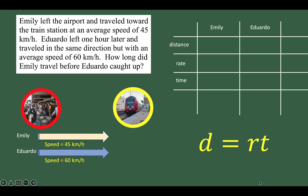Let's organize the given. Emily traveled at the rate of 45 kilometers per hour and Eduardo traveled at the rate of 60 kilometers per hour. We do not know how long each traveled, so we use a variable. If we let t be the length of time Eduardo traveled, then Emily's time is represented as t plus 1 because Emily started one hour earlier. On the other hand, if we let Emily's time be t, then Eduardo's would be t minus 1.